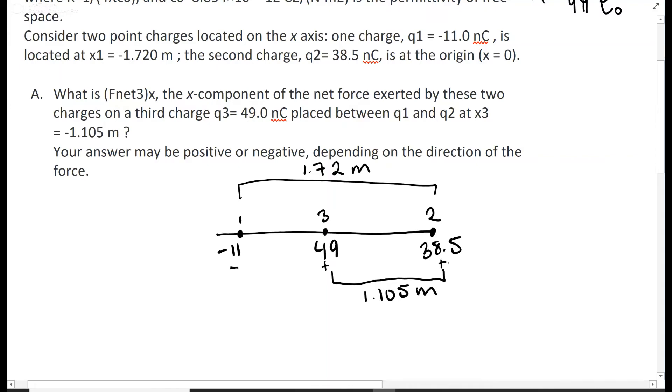Negative and positive are attractive, so charge 1 is gonna pull charge 3 to the left. And then positive and positive are repulsive, so charge 2 is actually pushing charge 3 to the left. So overall, charge 3 is moving to the left, and we already know that.